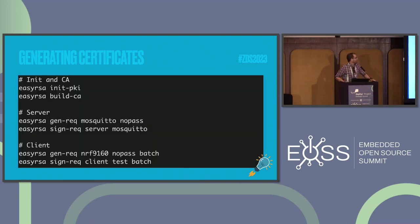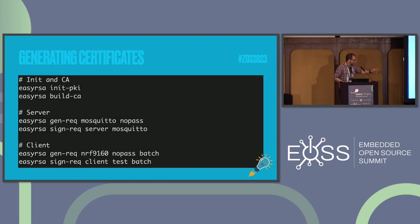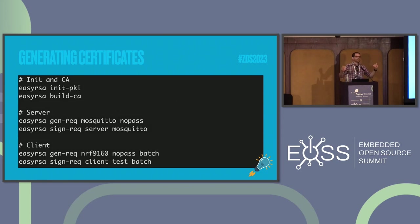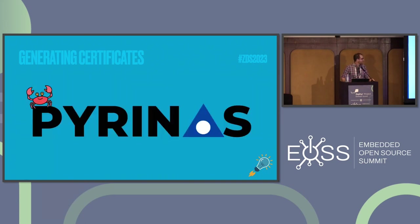Here is an example of EasyRSA — just initializing, building your CA, building your server cert, and then also building a cert for one of your devices. That's the general process of it.